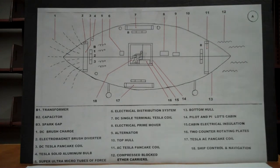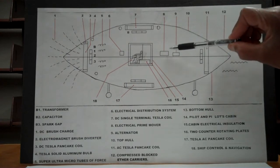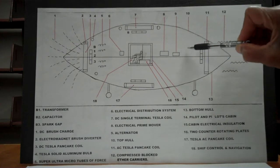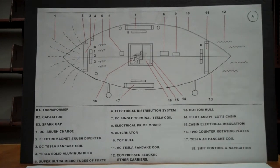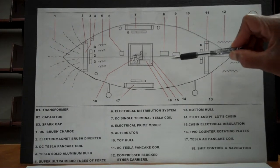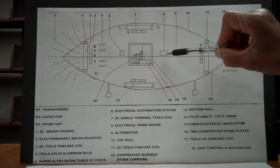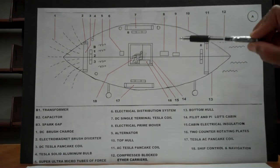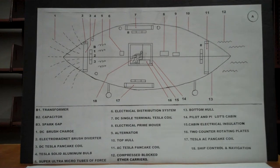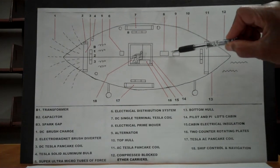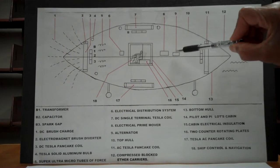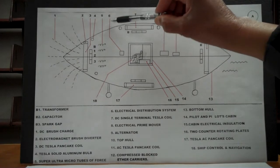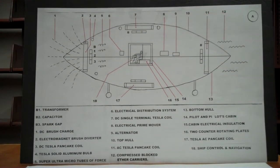Number eight is the electrical prime mover, which is needed to help the alternator or generator produce electricity. You can use hydrogen — hydrogen is also used as an over-unity device. Number nine is an alternator; the prime mover moves the alternator to turn around, and the alternator produces electricity, which sends it to number six, the electrical distribution system.